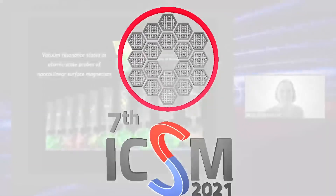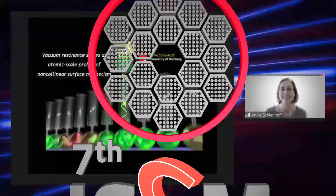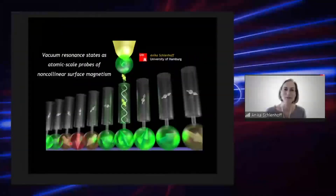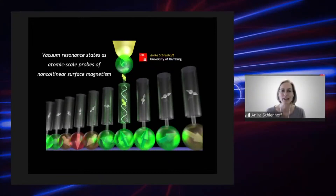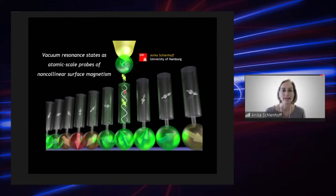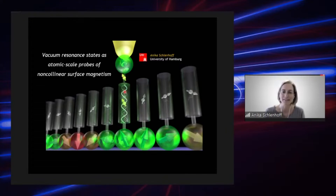Thank you for the introduction, and welcome everybody. I'm Annika Schoenhoff from the University of Hamburg, and I will show you today how we can use vacuum resonance states above surfaces as atomic-scale probes of non-collinear surface magnetism. I would like to thank the organizers for inviting me and for giving me the opportunity to present my research here.